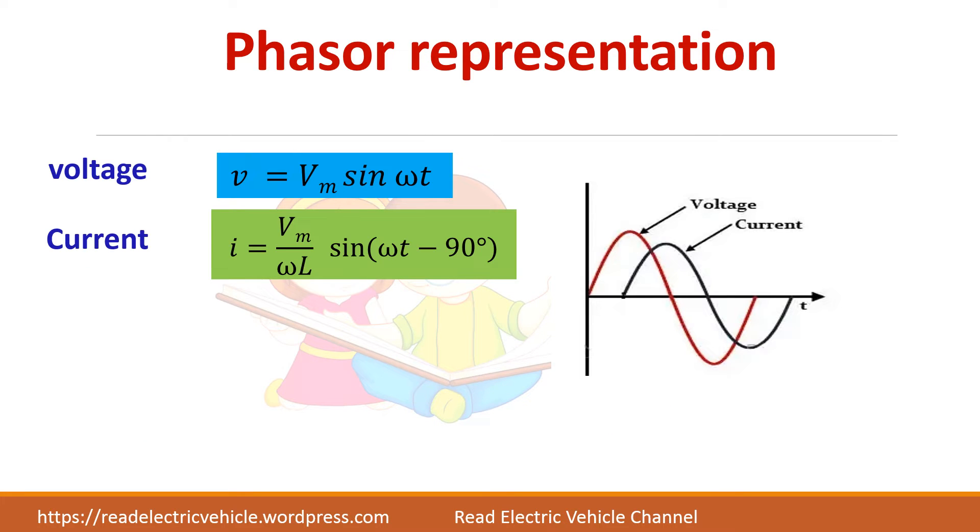Now let us draw the phasor diagram for the voltage and current. From the equation itself you can understand this is sin ωt and this is sin(ωt - 90°). It means that the current is lagging the voltage by 90°. So let us draw the phasor diagram. Here is V, so current will be here, lagging by 90°.